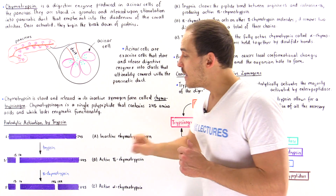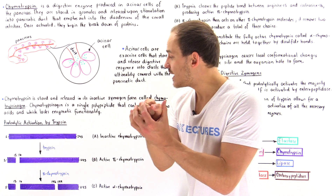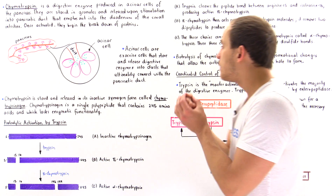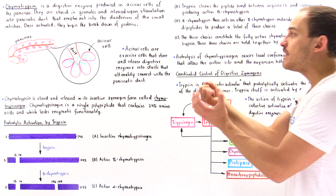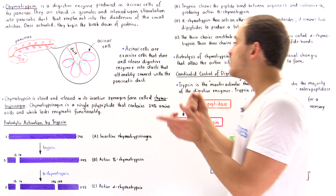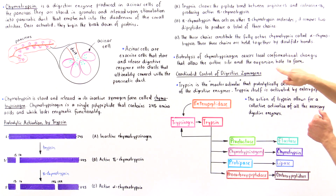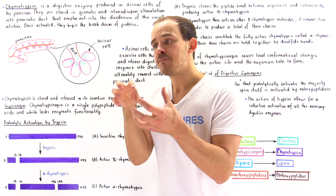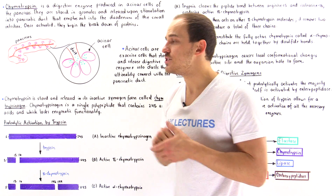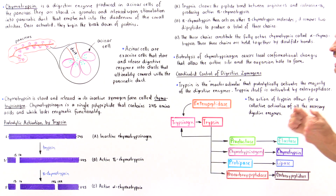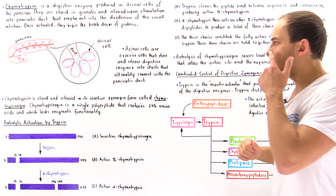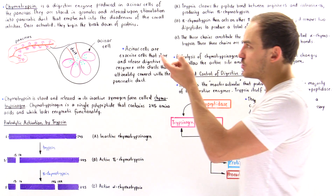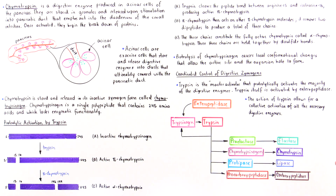This small localized change creates a perfect active site that can fit the substrate molecule, and also creates the oxyanion hole that chymotrypsin uses to stabilize and lower the transition state energy in the proteolytic reaction carried out by this digestive enzyme.